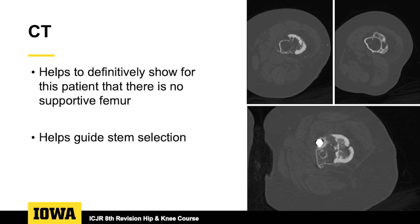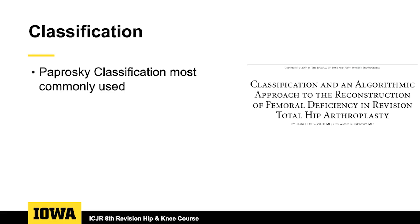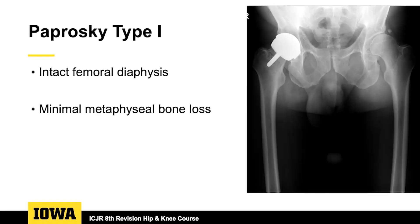The classification of femoral bone loss — almost everybody is using the Paprosky system, described almost 20 years ago from Rush. Paprosky type 1 femoral bone loss: you really have an intact femoral diaphysis and do not have a great deal of metaphyseal bone loss.